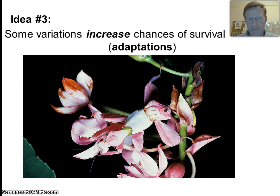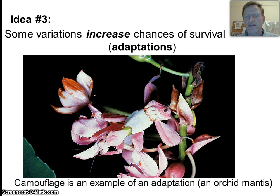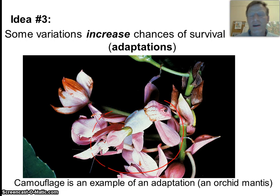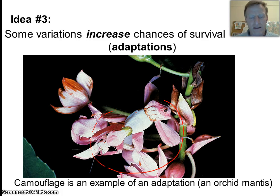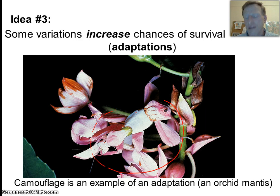The third idea is that some variations increase your chances of survival — Darwin called those adaptations. For example, this orchid mantis is pink and looks just like the pink orchids it hangs out on, trapping and killing pollinators coming for nectar. If it were a brown, blue, or green mantis, it would not be as successful in capturing prey. The fact that it looks just like the flowers gives it an advantage over other colored mantises. Over time, this coloration evolved as those mantises that hung out on pink flowers were more successful at getting food and reproducing.